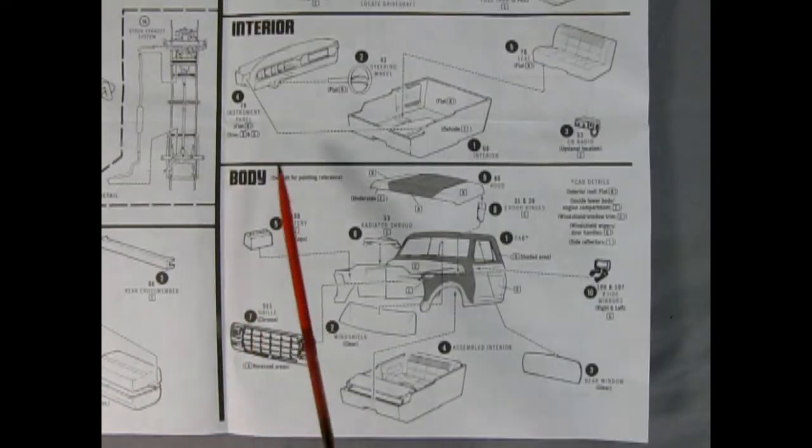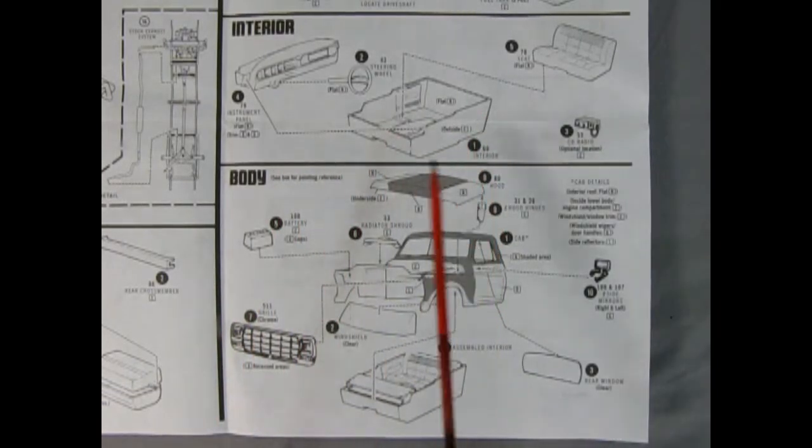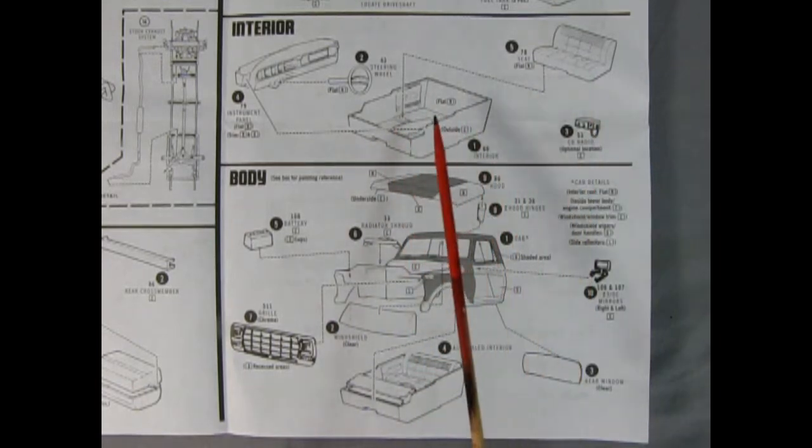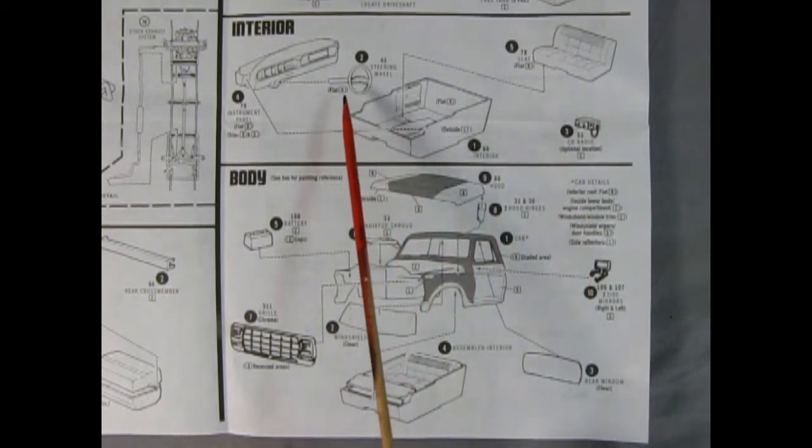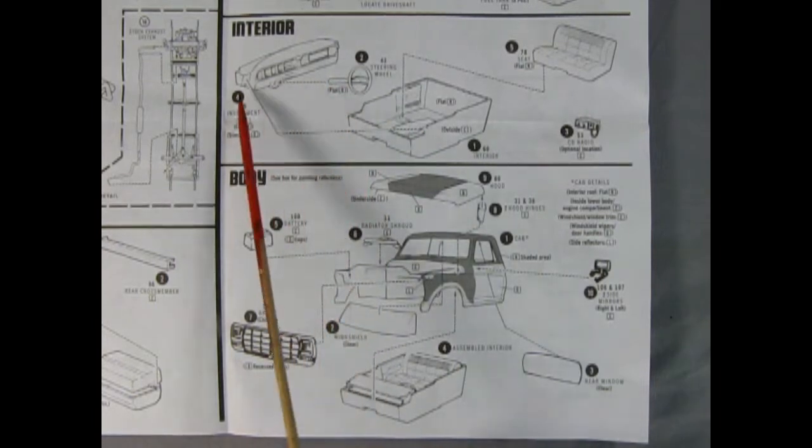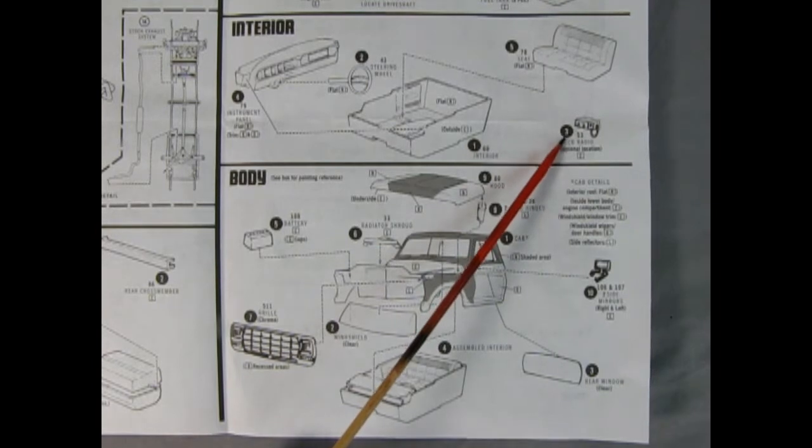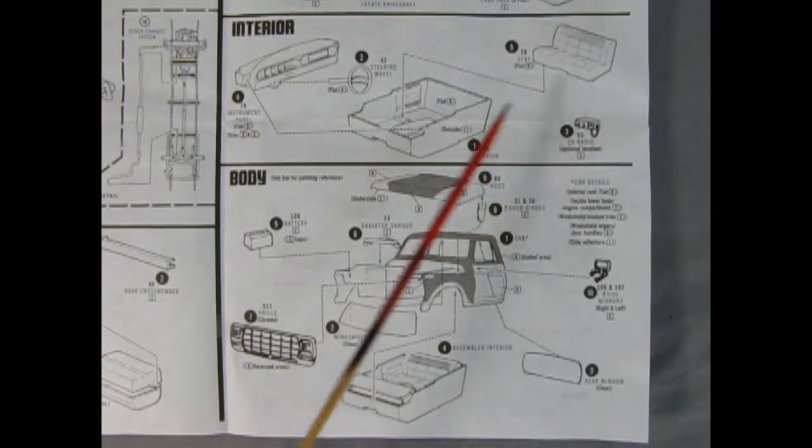These two panels show our interior which is quite simplified. You have a tub style again which was popular back in this era, a bench seat that drops in from the top, a steering wheel with a column on it, and a dashboard and our ever-present CB radio which was one of the greatest things of the 70s.